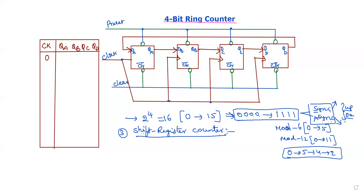There are two words: register and temporary memory device. The data is stored temporarily because every shift changes in every clock, making it a temporary memory device. We use different types of shifting: right shifting, left shifting, rotate right shifting, and rotate left shifting. We use these concepts to change the data and generate a counter sequence of numbers.